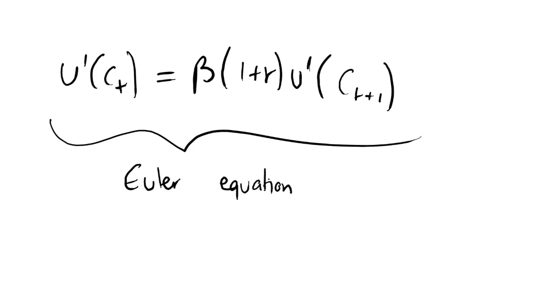We can then use this condition with certain restrictions on our discount factor beta to make the (1+r) term cancel out and very much simplify our Permanent Income Hypothesis model. That will be the topic of the next video, but we'll call it here now that we've derived the Euler equation. Thanks for watching. Check out the playlist to see what happens when we introduce current income shocks — permanently and temporarily — into the model, and subscribe for future videos.